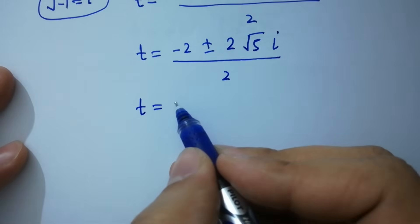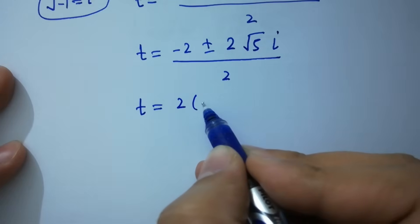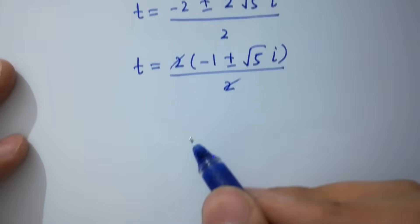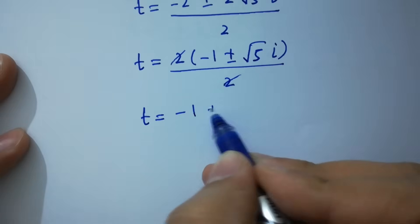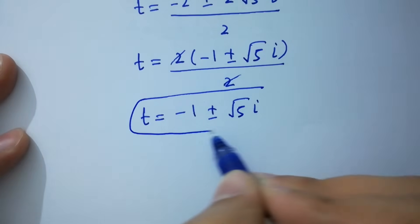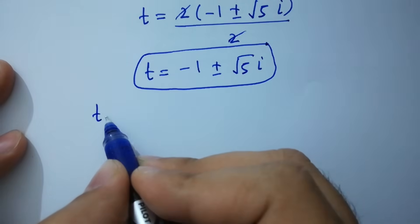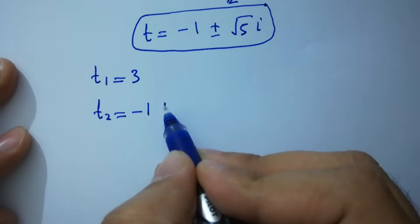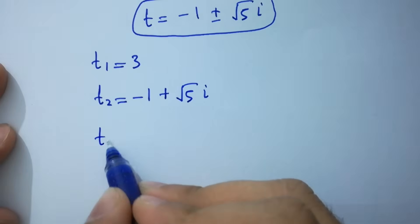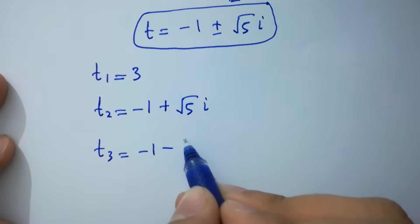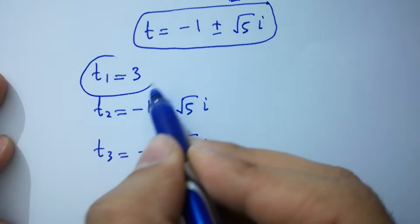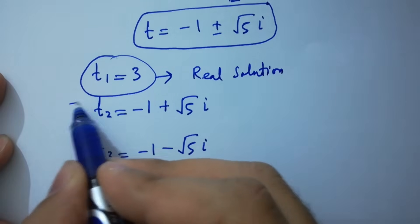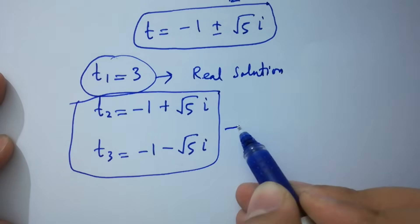Taking 2 as common, t = (-1 ± √5 · i). So we have T1 = 3, T2 = -1 - √5·i, and T3 = -1 + √5·i, where T1 = 3 is the real solution and T2 and T3 are complex solutions.